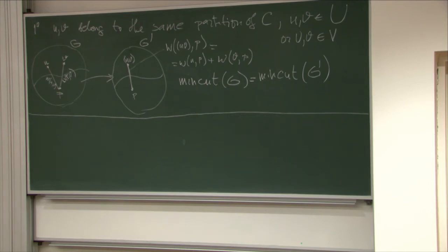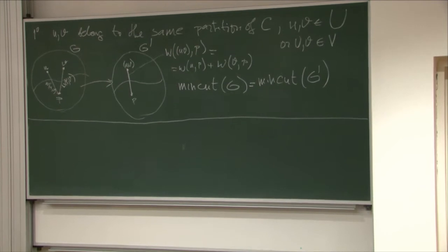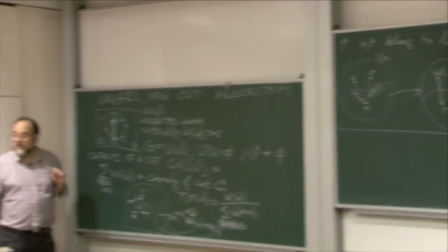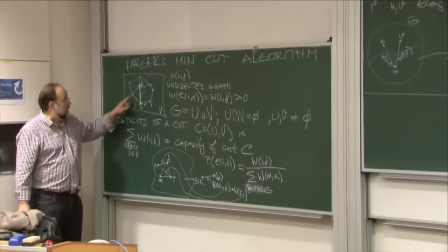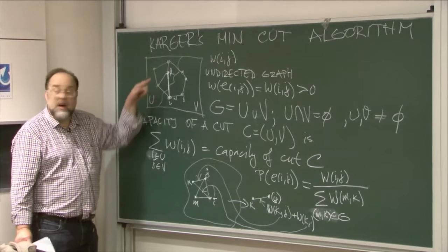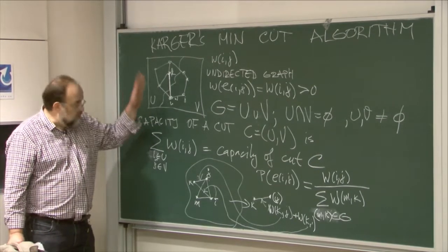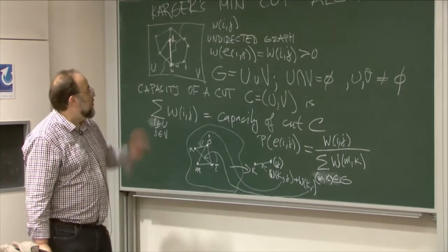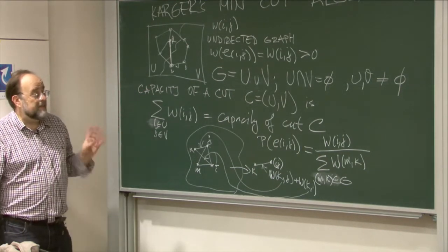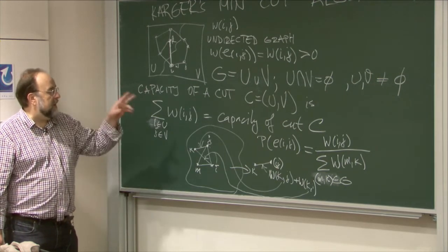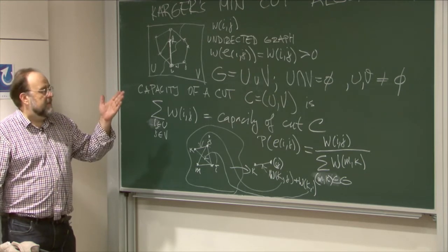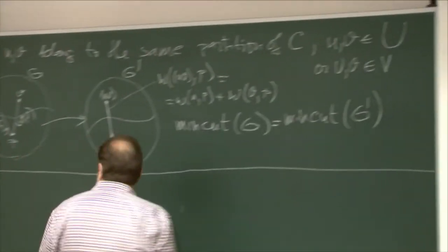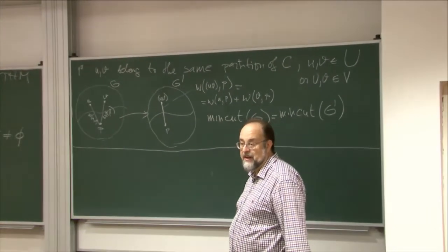A cut is simply a partition of the graph into two subsets of vertices. The capacity of the cut is the sum total of the weights of edges that go across the cut. We want to find the cut with the minimal possible capacity. One way of doing it is via max flow, but it's extremely inefficient — it's O(n^4) in the number of vertices, the fastest way known. So we want to reduce that exponent.